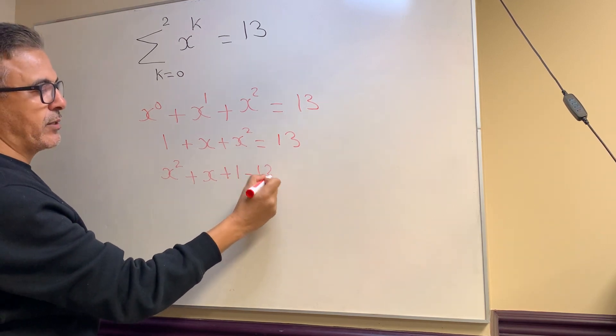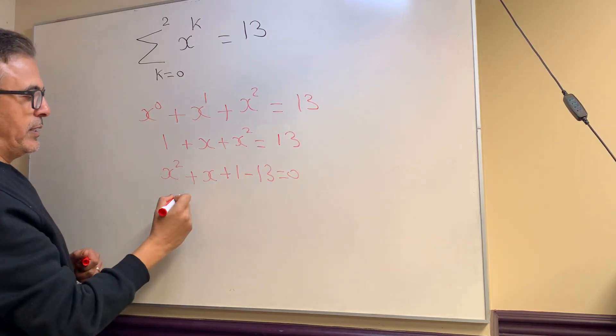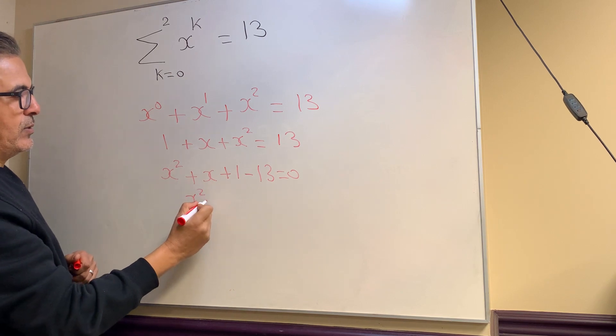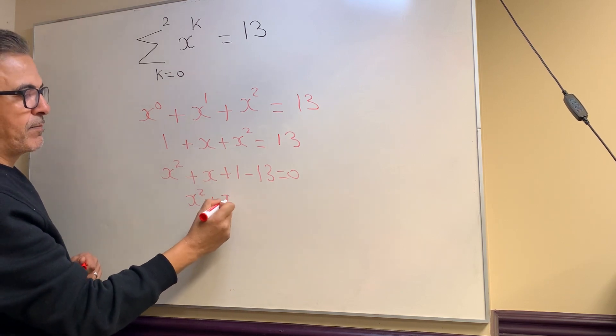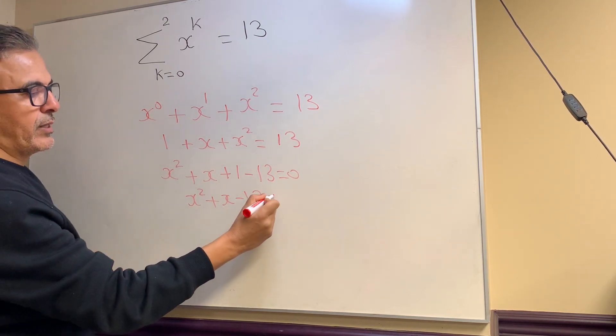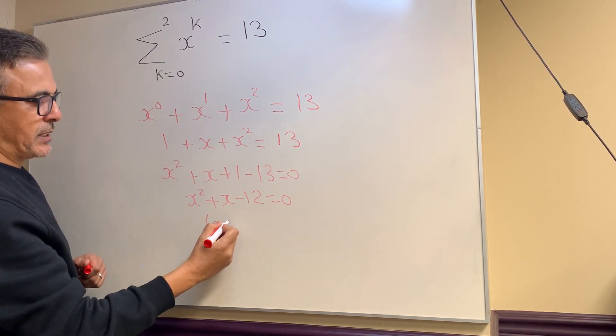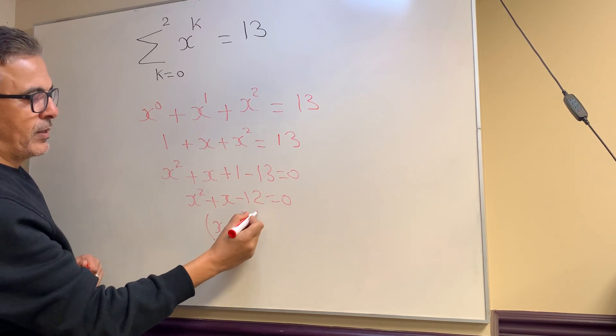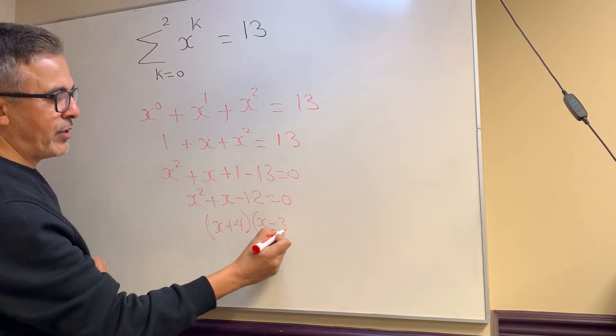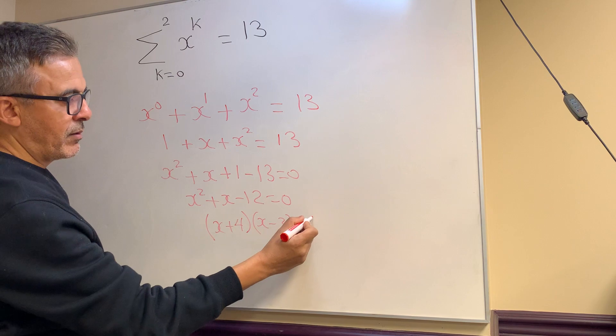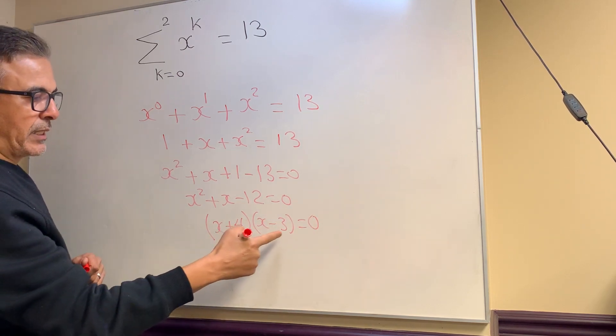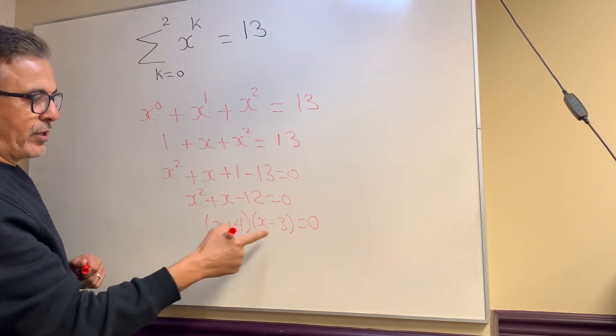This will be x^2 + x - 12 = 0. Factor this. This factors into (x + 4)(x - 3) = 0, because 4 times -3 gives you -12, and when you add 4 and -3 you get positive 1. Therefore, x equals -4 and positive 3, and that is your answer.